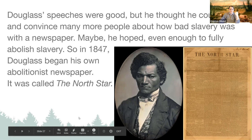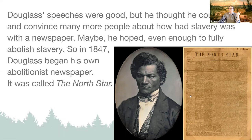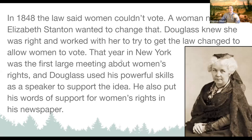He did become a national leader for the abolitionist movement in Massachusetts and New York. He did so much to help more slaves. He didn't only speak out about slavery — he used his abilities and resources to help all people he felt weren't being treated equally. One of these groups was women. In 1848, the law said women couldn't vote and they didn't have a say in government. A woman named Elizabeth Stanton wanted to change that, and Douglass knew she was right. He worked with her to get the law changed to allow women to vote, and that year in New York was the first large meeting about women's rights. He also put his words of support for women's rights in his newspaper.